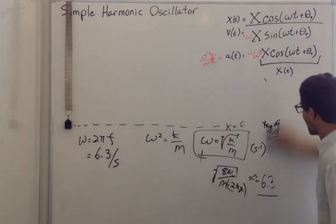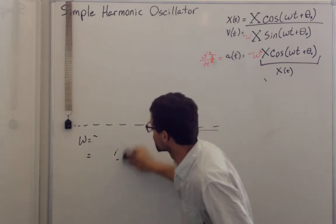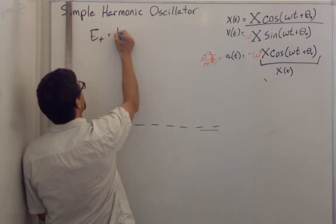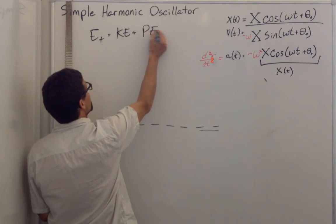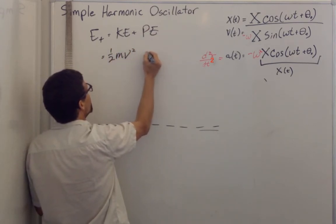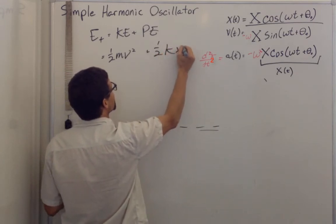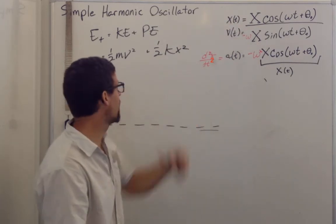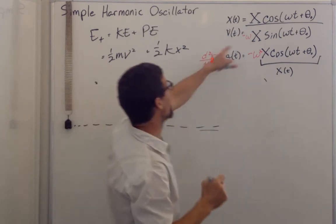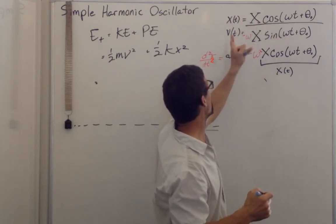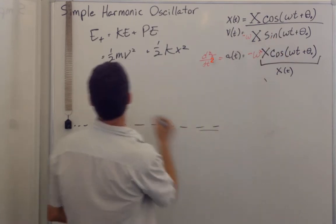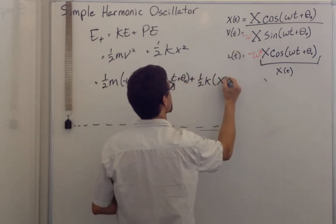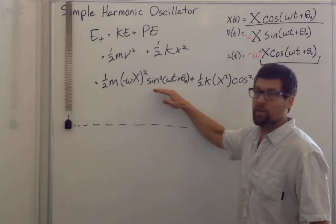One more thing. We want to verify that using this equation of motion conserves energy for us. And if we remember the total energy equals the kinetic energy plus the potential energy in the spring, which is one-half mv squared plus one-half kx squared, where x is not the amplitude. X is the actual displacement because that's how much energy you have stored in your spring. And now we just substitute this in. We're going to have to square the displacement and we're going to have to square the velocity.